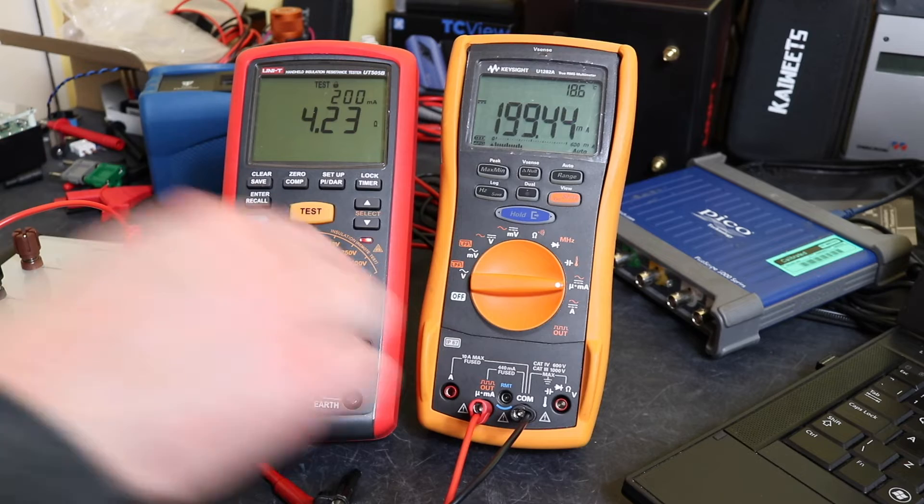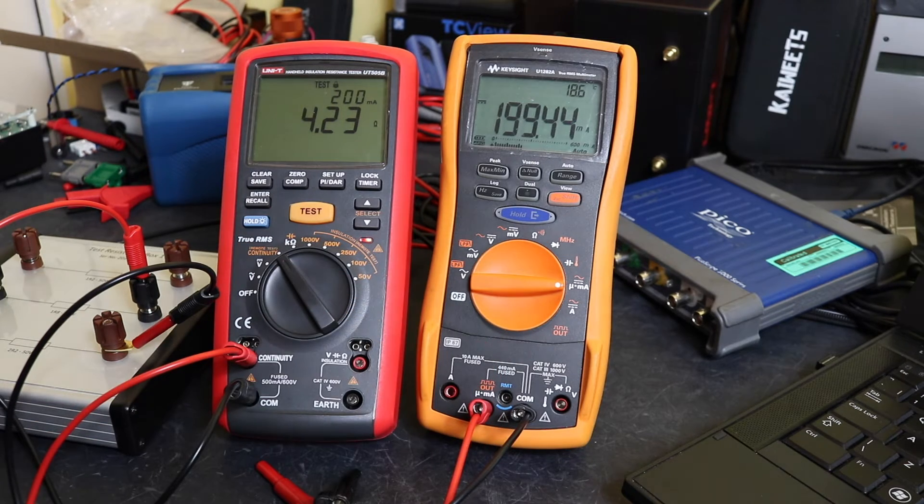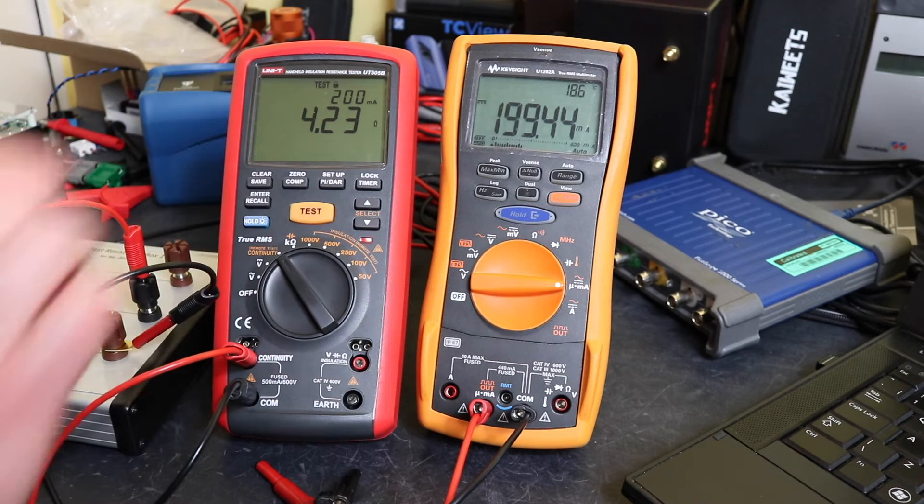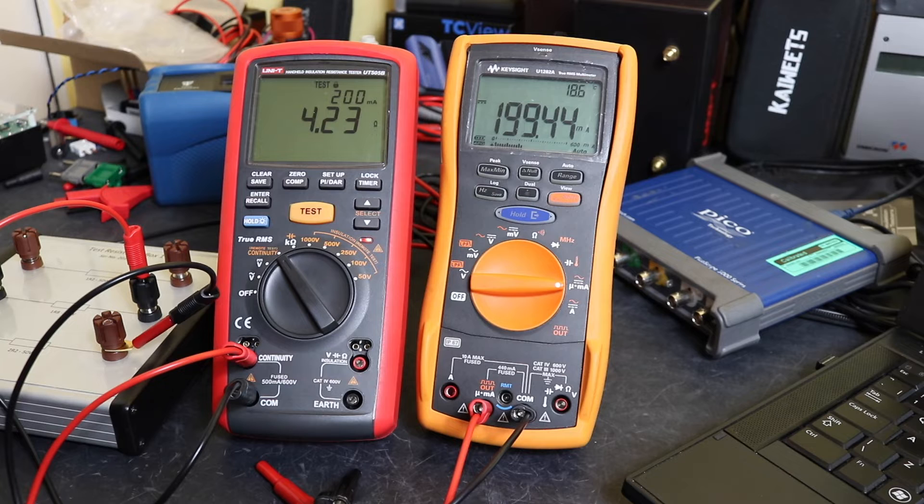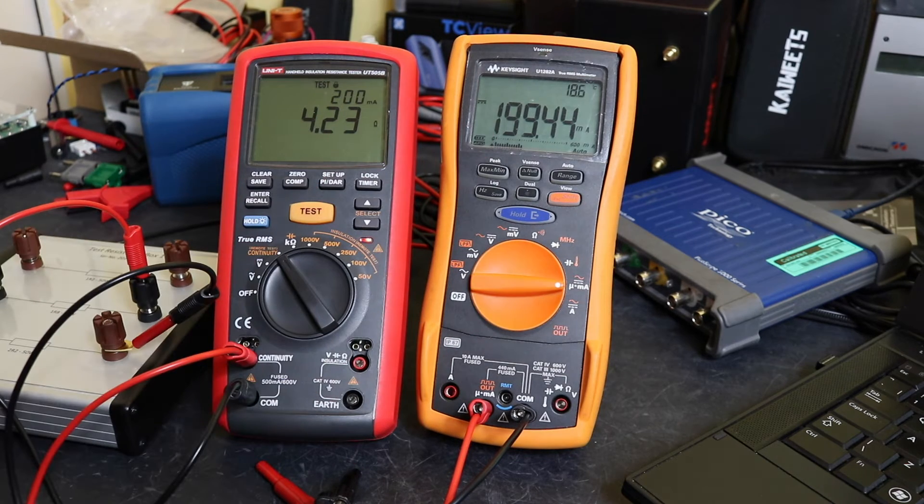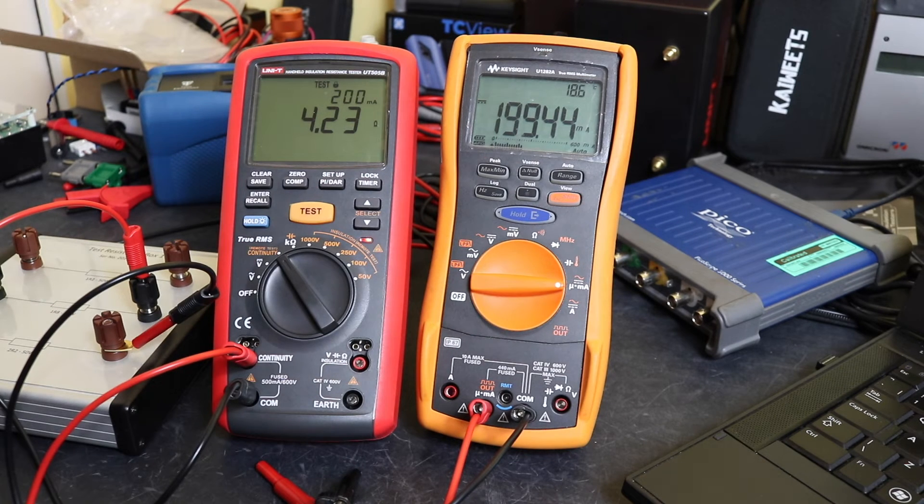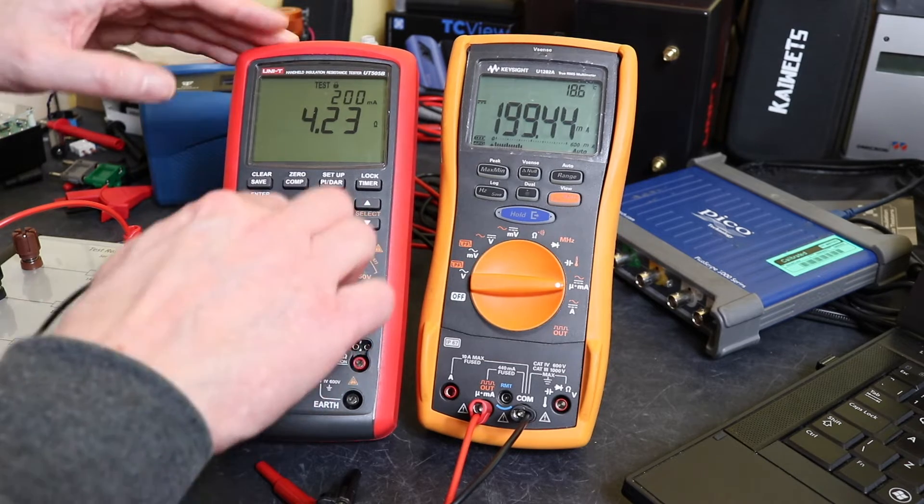I know it's 2.2 ohms, but this has got its own internal resistance for the shunt. That's why the reading isn't quite right on the instrument, but current-wise we're getting 199.44, so that's all good. Okay, so another little reconfiguration required.